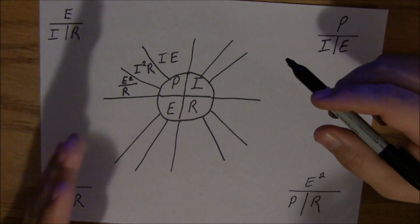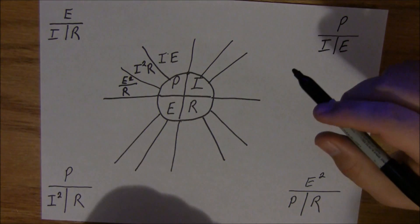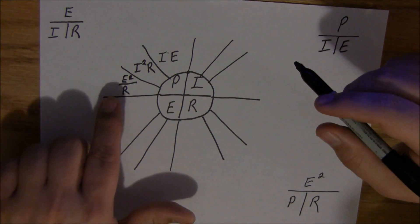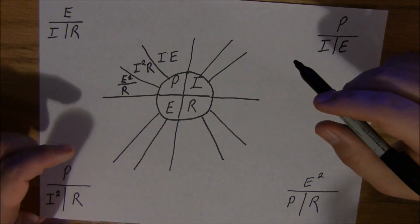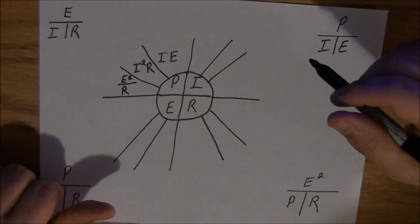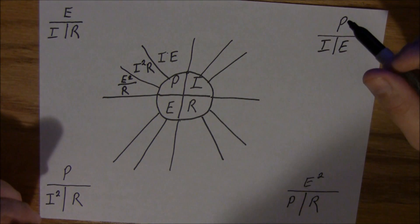This is going to be E squared divided by R. So as long as you know any two values, you can come up with power. You've got current times voltage, current squared times resistance, or voltage squared divided by resistance will give you how many watts of power.